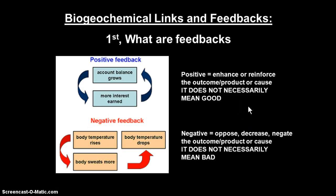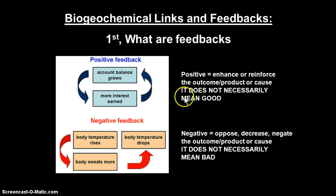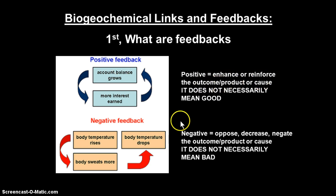In order to connect these things, we need to talk about links and feedbacks in biogeochemistry. When we say a feedback loop, what we mean is something that occurs in a cycle that affects that cycle either negatively or positively. A positive feedback is something that enhances or reinforces the outcome in that cycle. So if your account balance grows, your account is larger and earns more interest, so your account balance grows even more — that's a positive feedback loop.